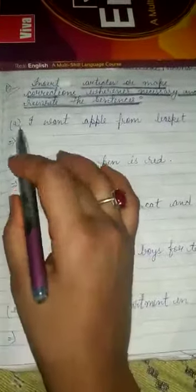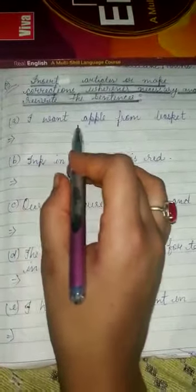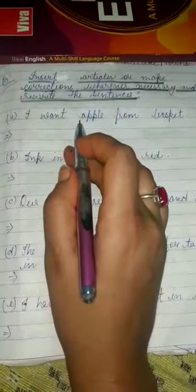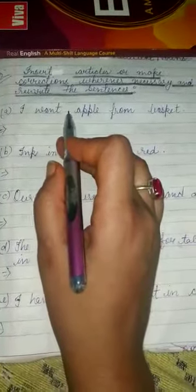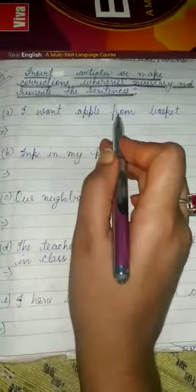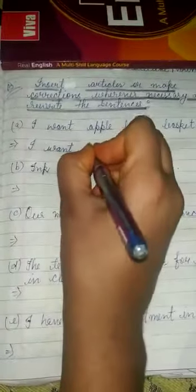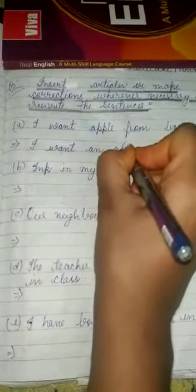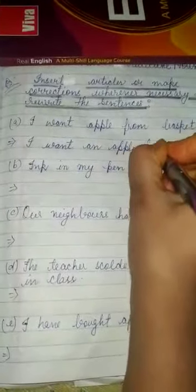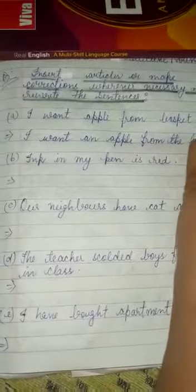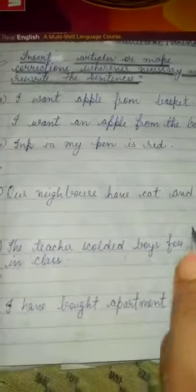We will see the first one — A: 'I want apple from basket.' So students, apple — 'A' is a vowel, so we use 'an'. I want an apple from the basket. So we will write: 'I want an apple from the basket.'